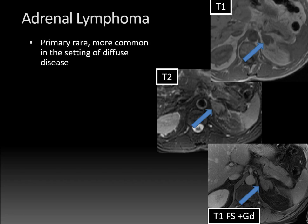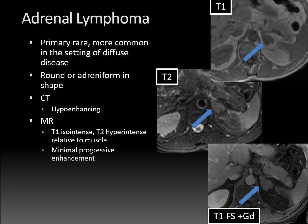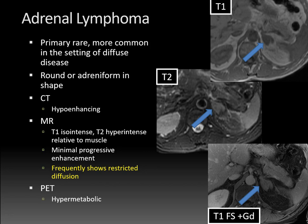Adrenal lymphoma is rare in the primary form and more common in the setting of diffuse disease. It often presents as round or adreniform in shape. On CT, it's usually hypo-enhancing. On MRI, it's T1 iso-intense and T2 hyper-intense relative to skeletal muscle, with minimal progressive enhancement. A key feature is that it tends to show restricted diffusion, which helps differentiate it from adrenal hyperplasia. On PET imaging, it's often hyper-metabolic, which is also helpful.